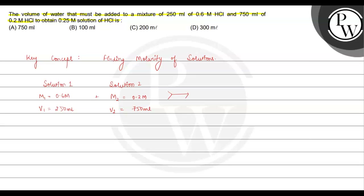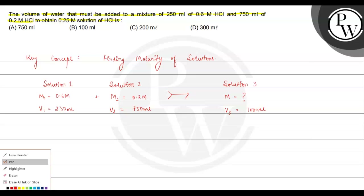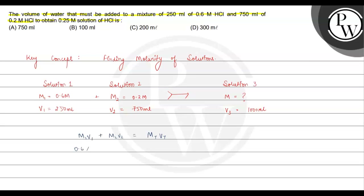The combined volume is 750 plus 250, which gives 1000 ml. The formula we will use is M1V1 plus M2V2 equals M-total times V-total. So, molarity 1 is 0.6, volume is 250, plus molarity 2 is 0.2, volume is 750.